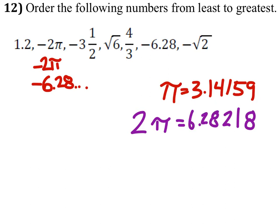Well, this number, if it's negative, is farther to the left on the number line than this negative 6.28, which makes negative 2π, in this case, the lowest of all the numbers.